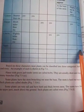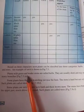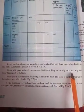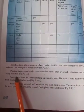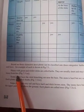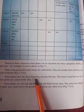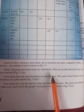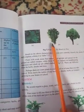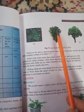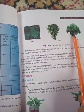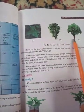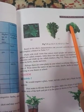Plants with green and tender stems are called herbs — they are usually short and may not have many branches. Plants whose stem branches out near the base are called shrubs. In trees, the branches arise from the upper part of the stem, not at the base.